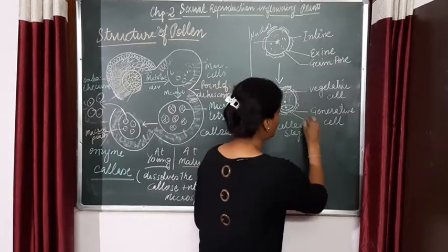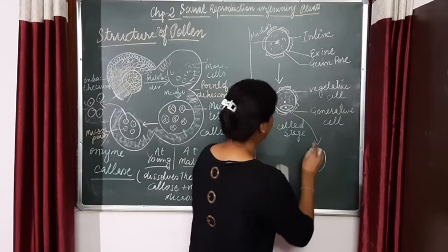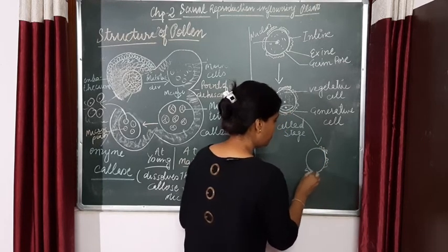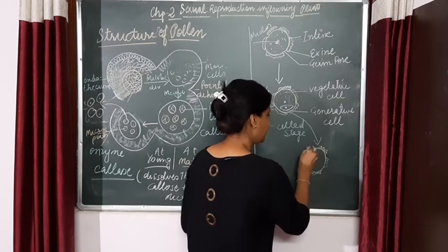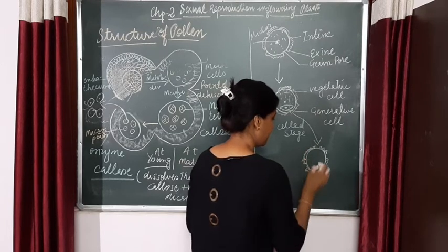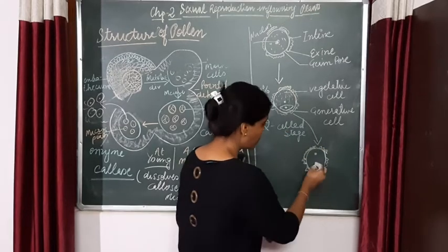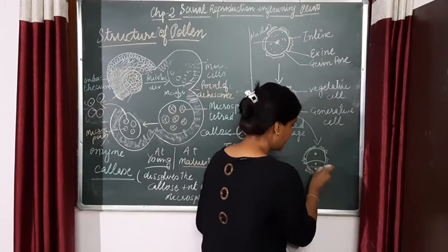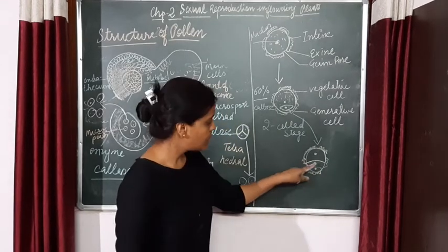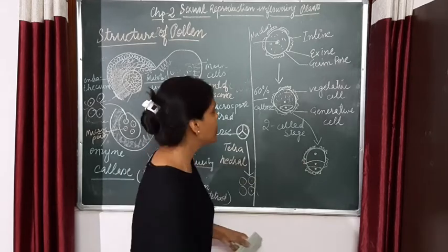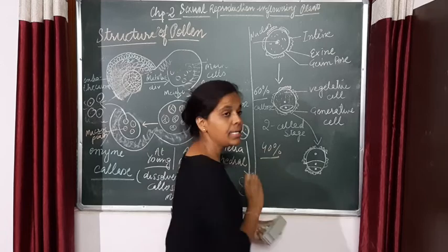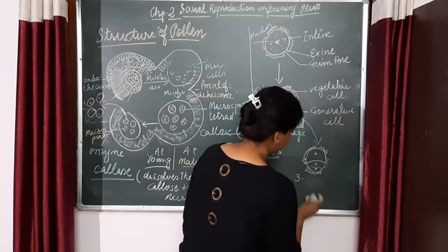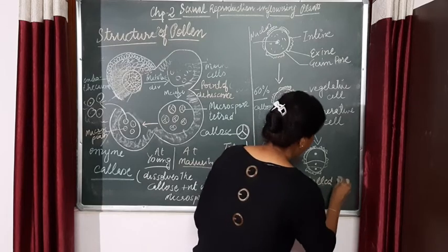In 40 percent of angiosperms, this generative cell will again divide mitotically and it will again form two more gametes. So this is a three-cell stage — the vegetative cell and two cells from the generative cell's division. In 40 percent of angiosperms the pollen falls at a three-cell stage.